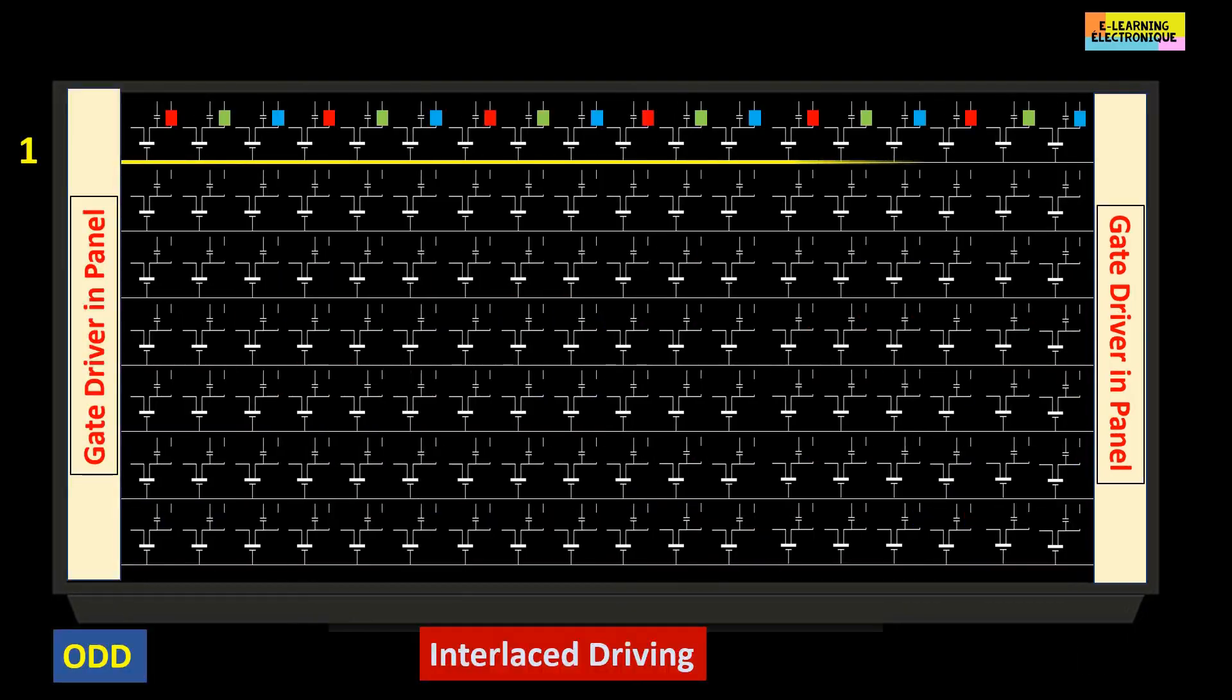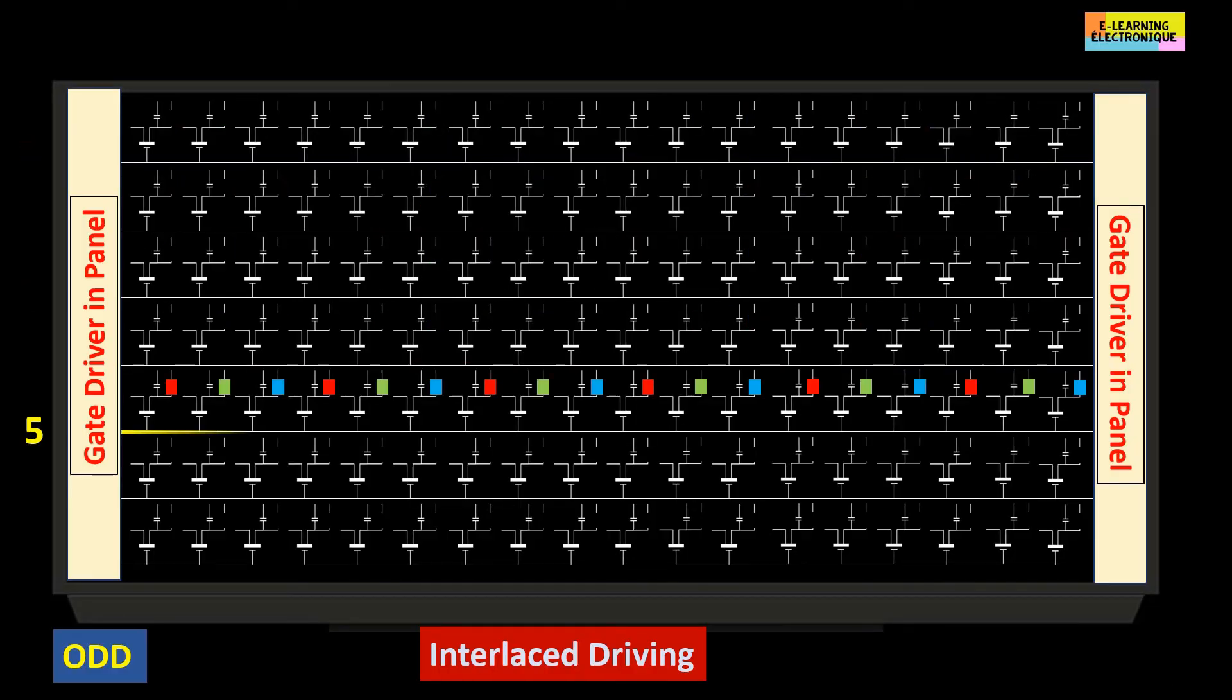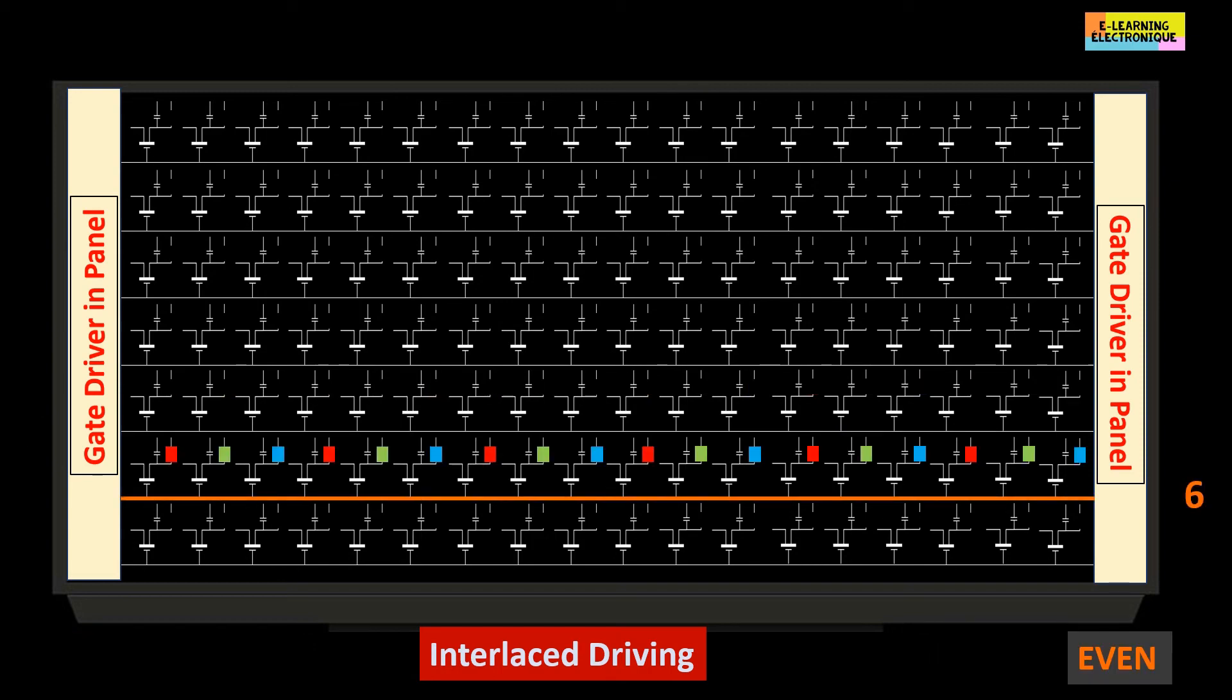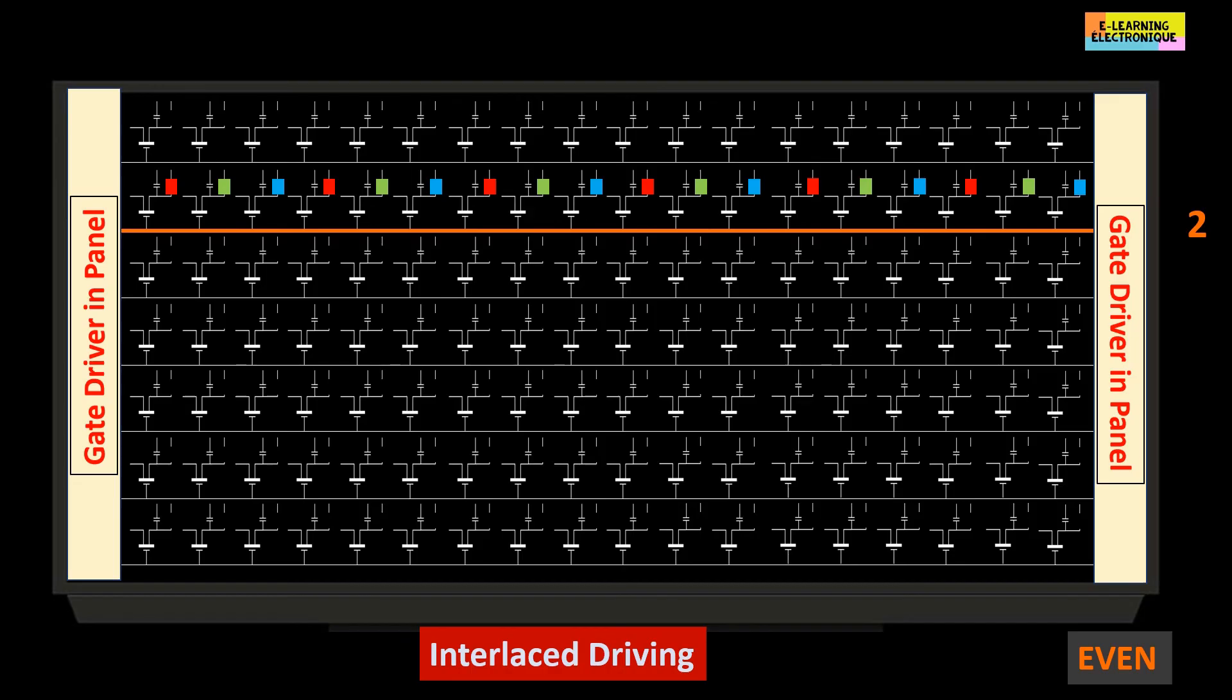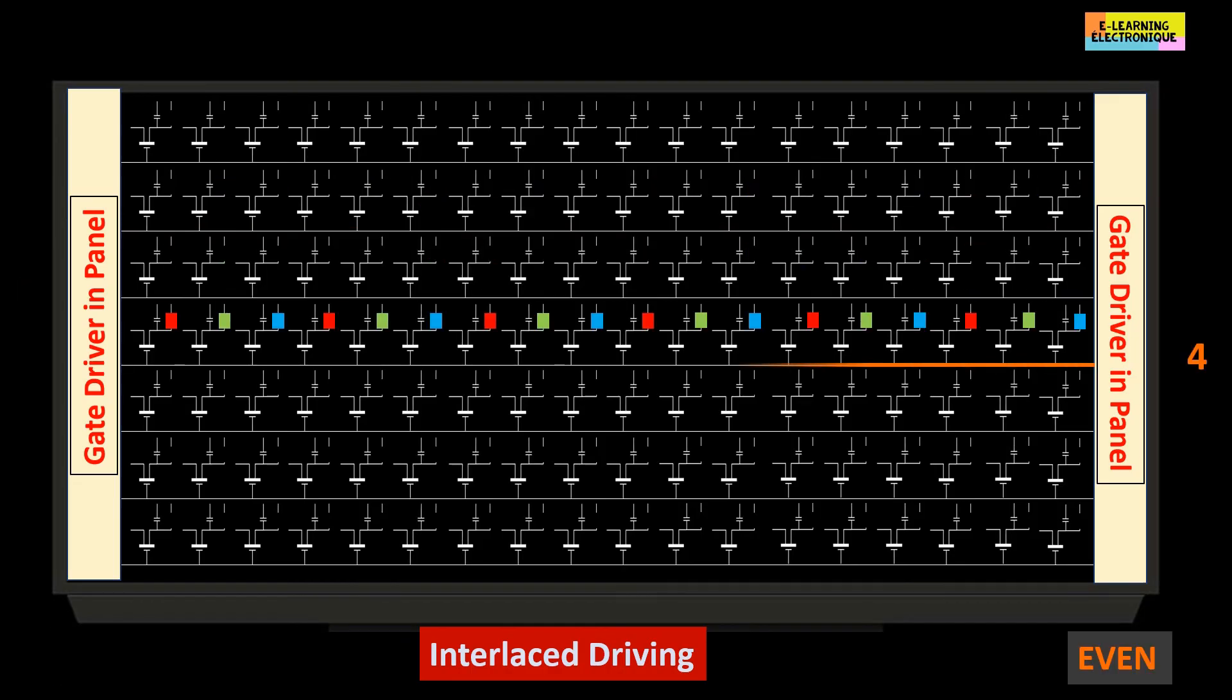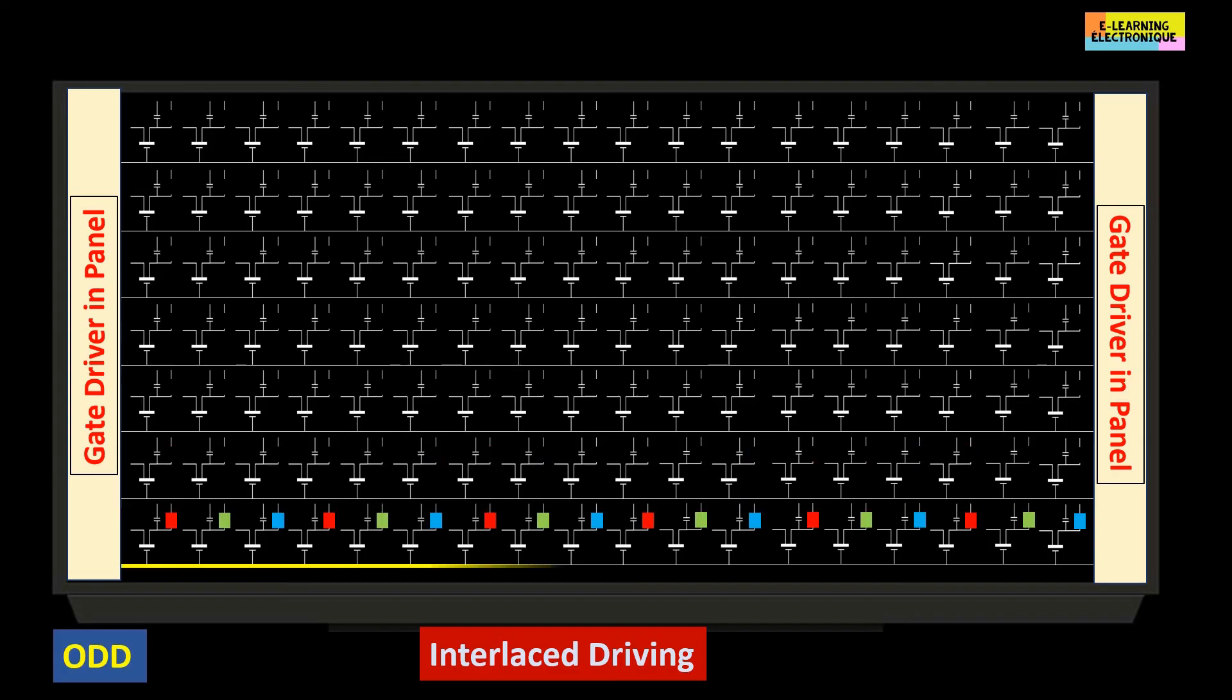Another way to scan the lines faster is the so-called interlaced mode. The odd lines are for example controlled by the gate driver on the left side of the screen and the even lines by the driver on the right side. Here for the illustration this scanning is deconstructed line after line but in reality the scanning is done in an instantaneous way and is ultra fast.